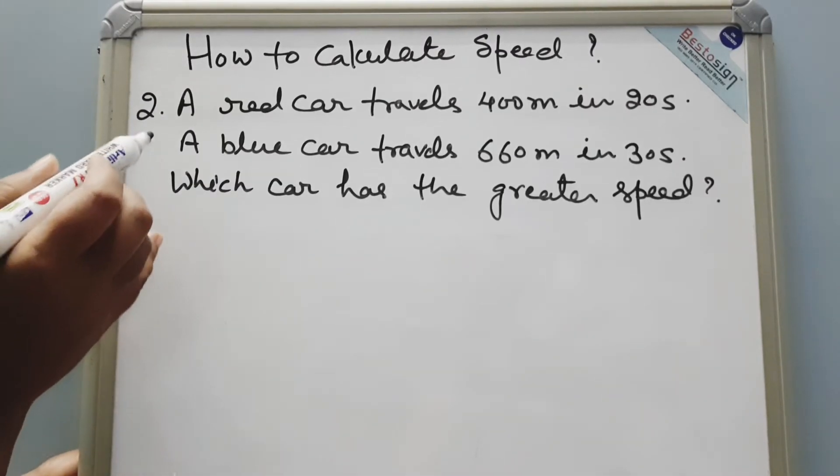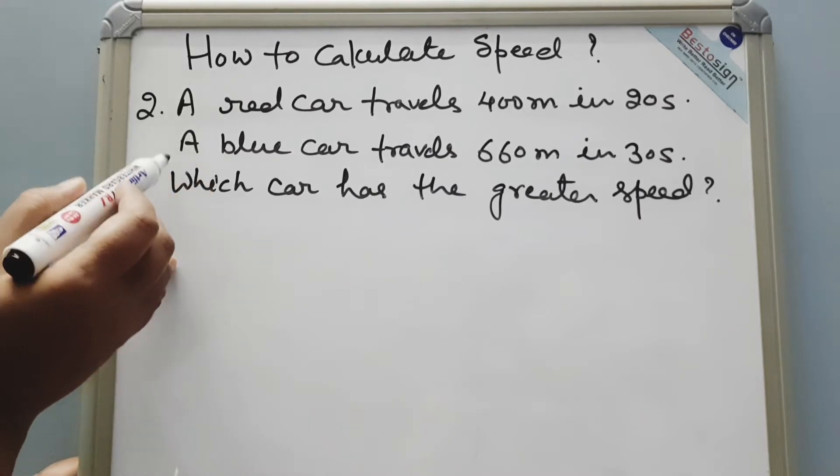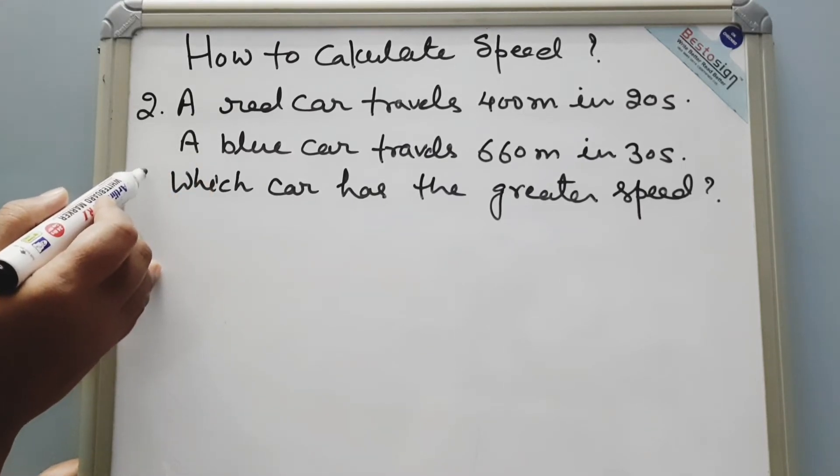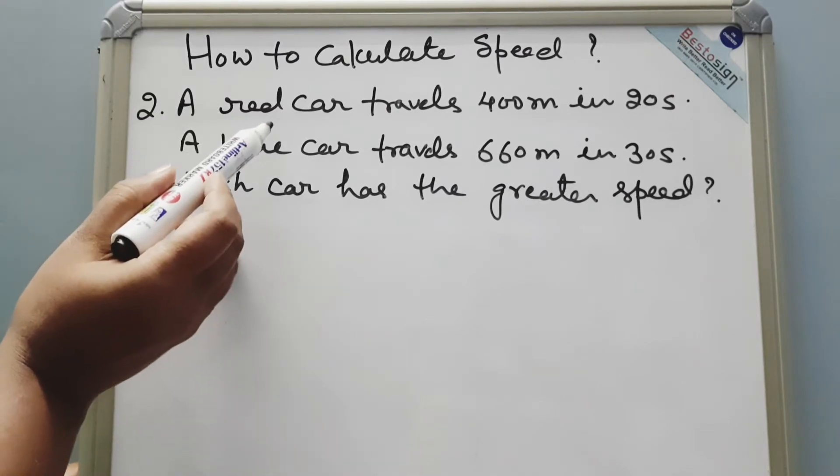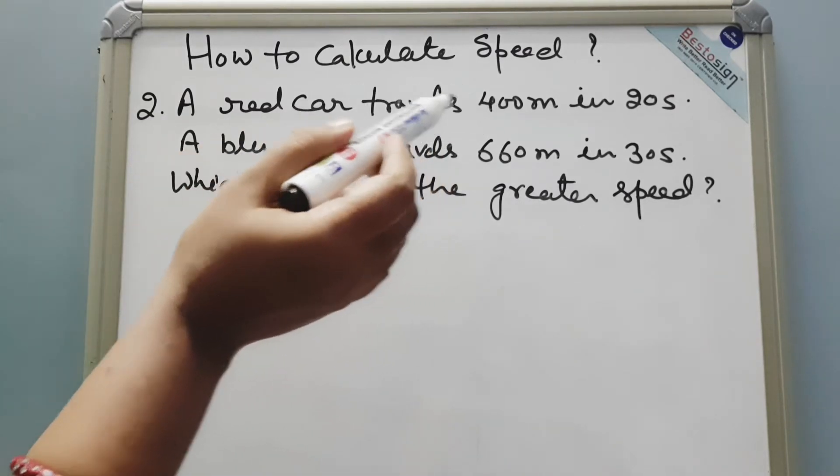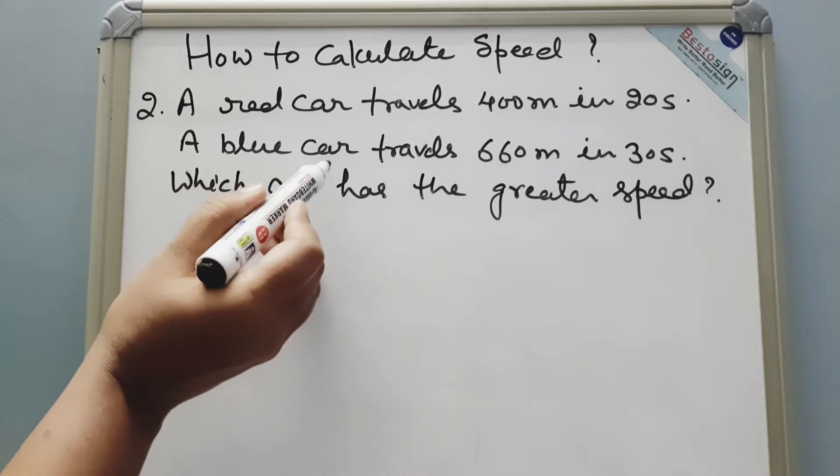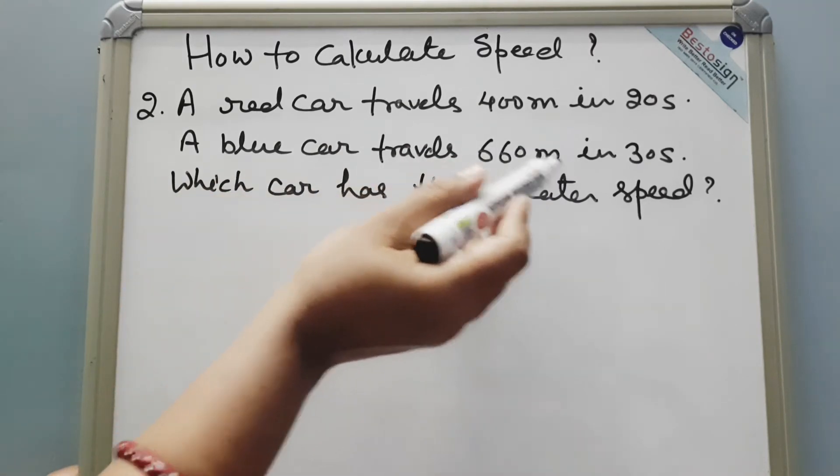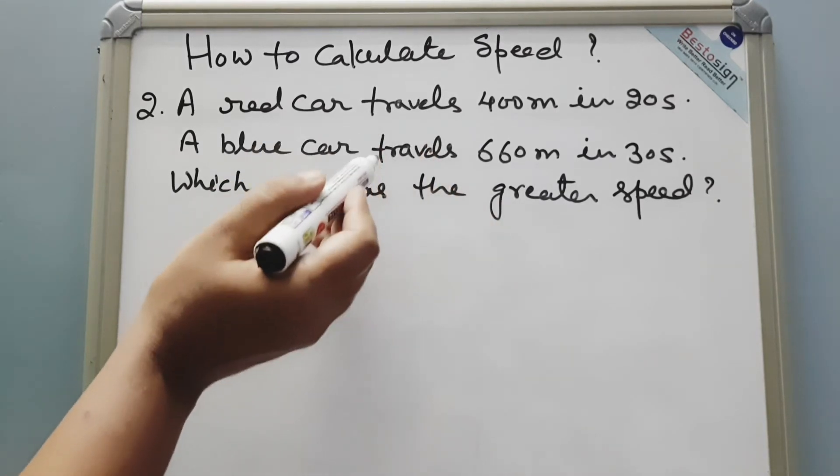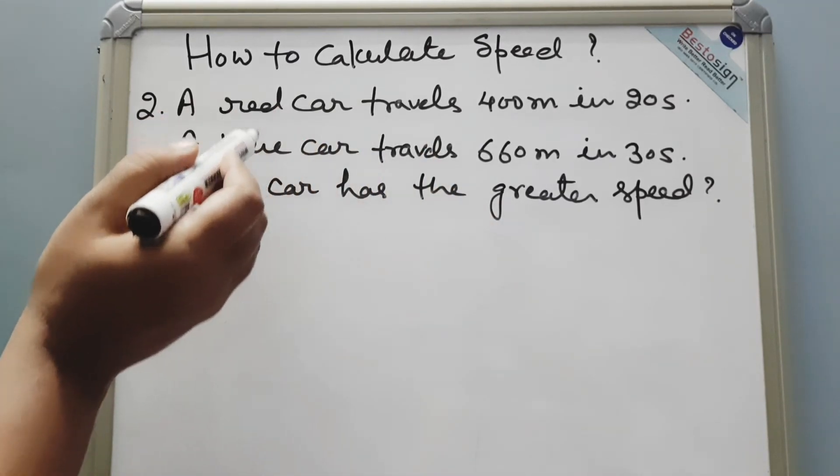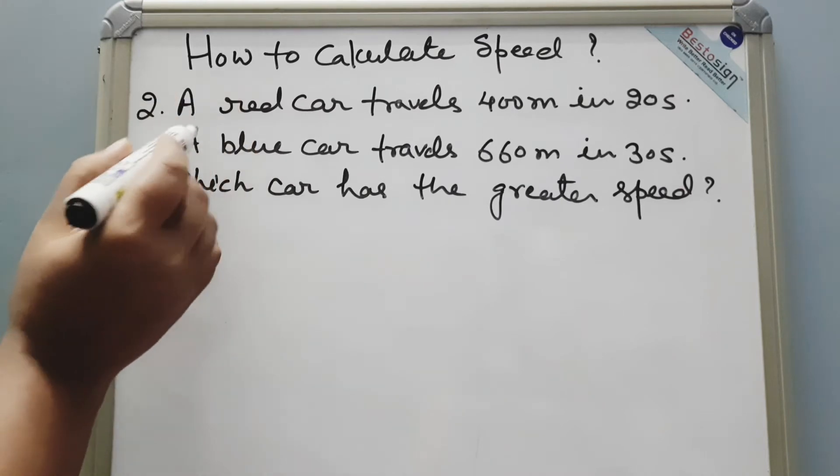This is another question to calculate speed. Actually in this question we are going to do a comparison. Question is: a red car travels 400 meters in 20 seconds, a blue car travels 660 meters in 30 seconds. Which car has the greater speed? So here we have to compare the speed between red and blue car.